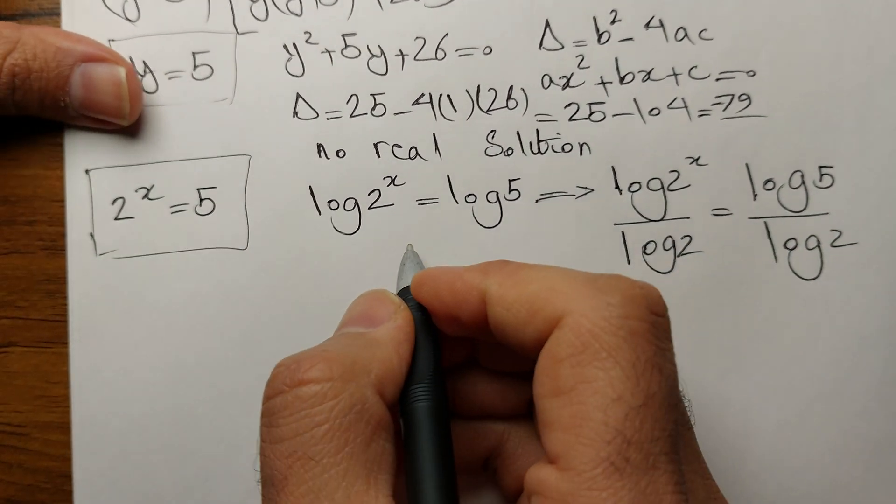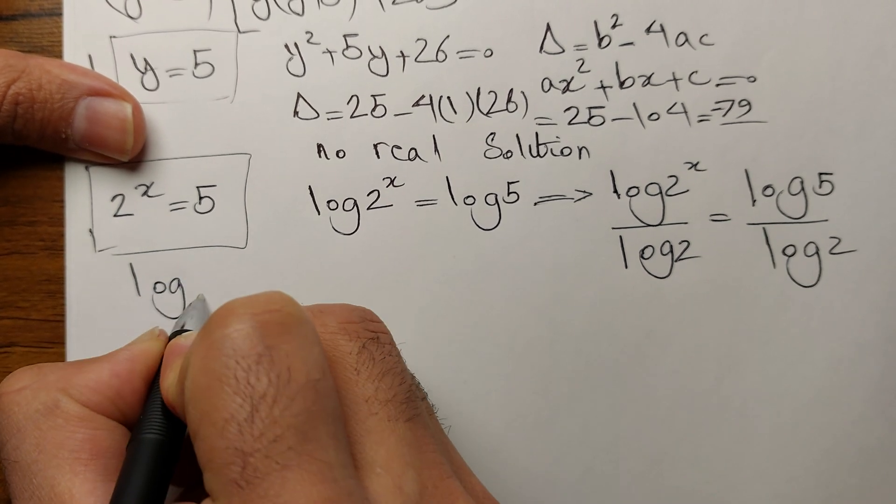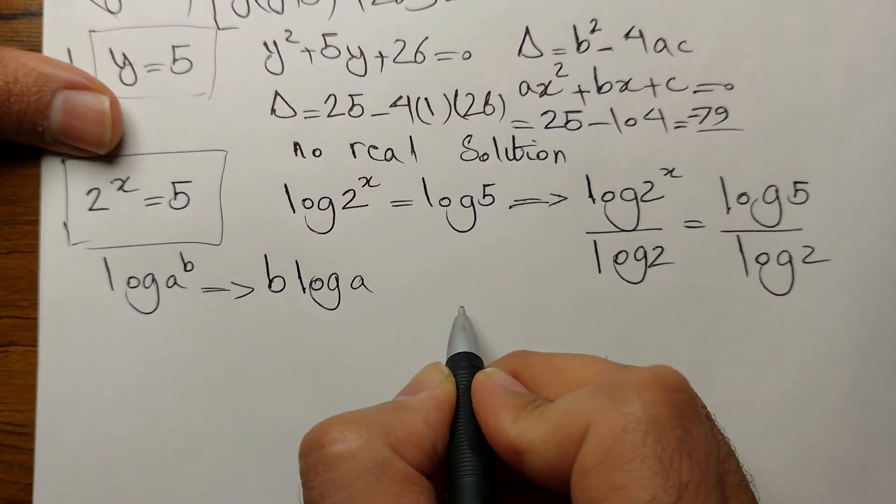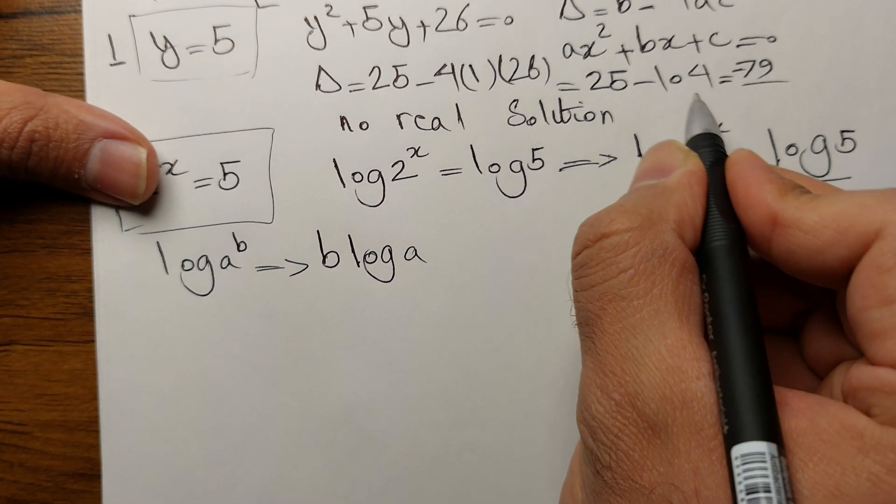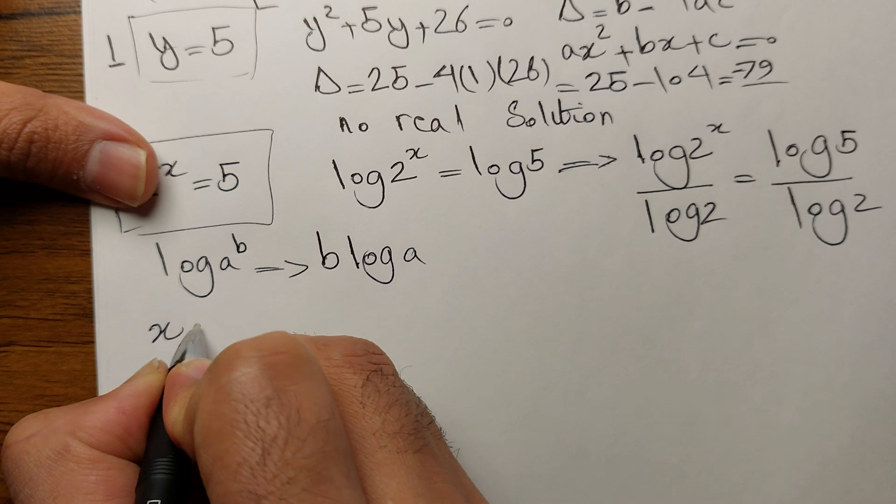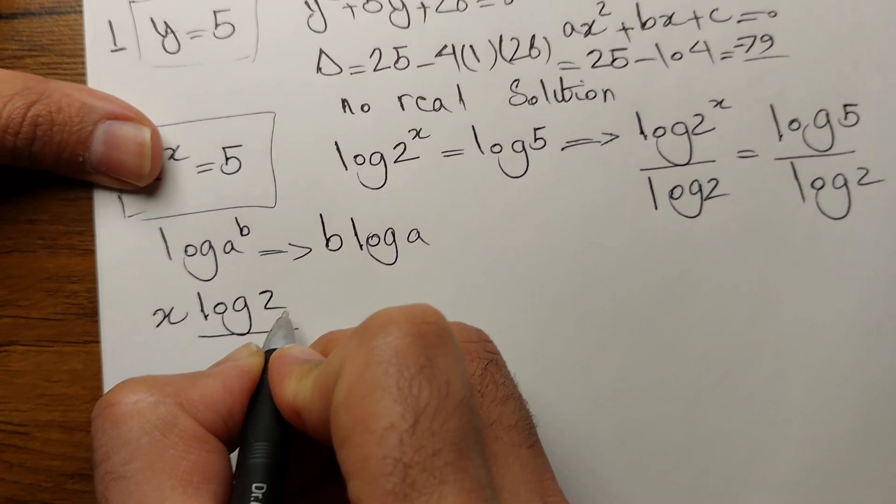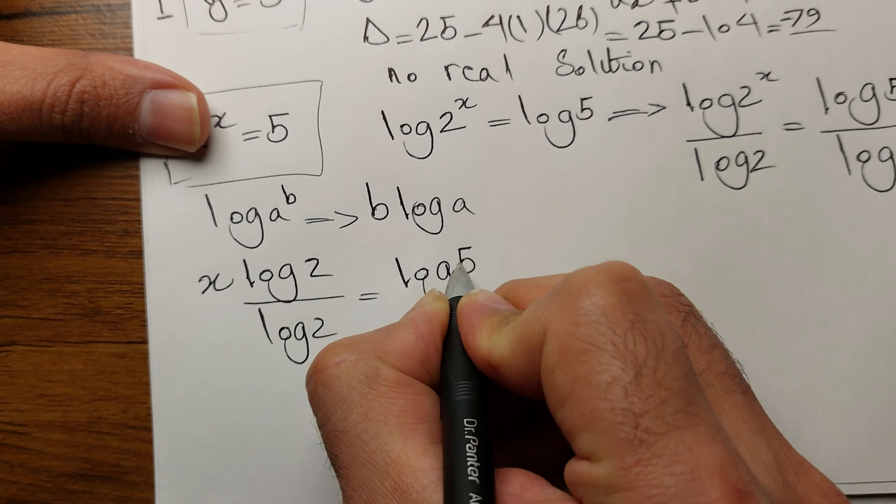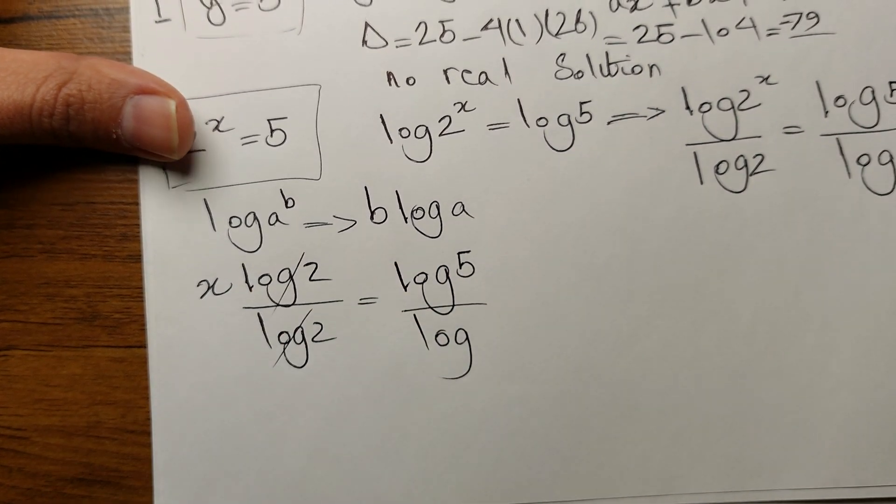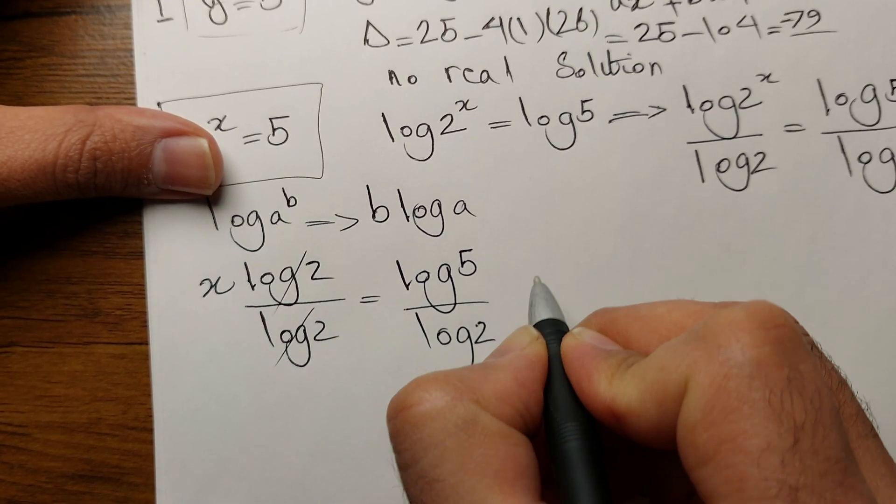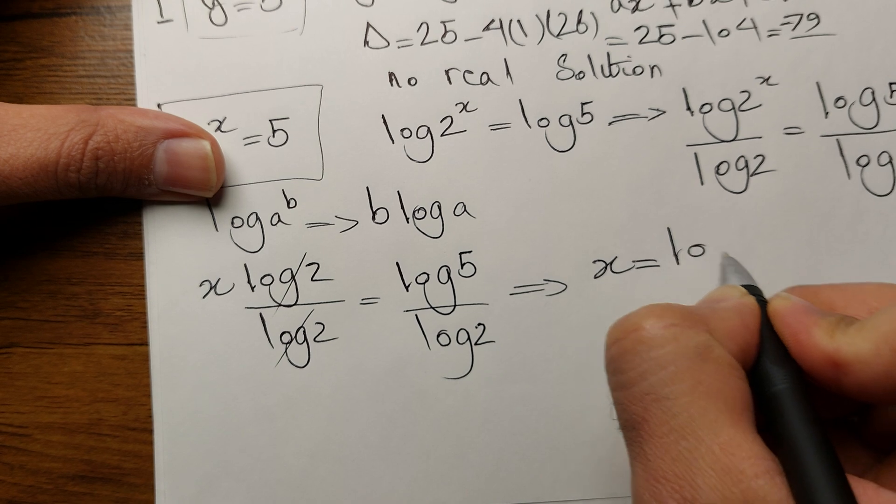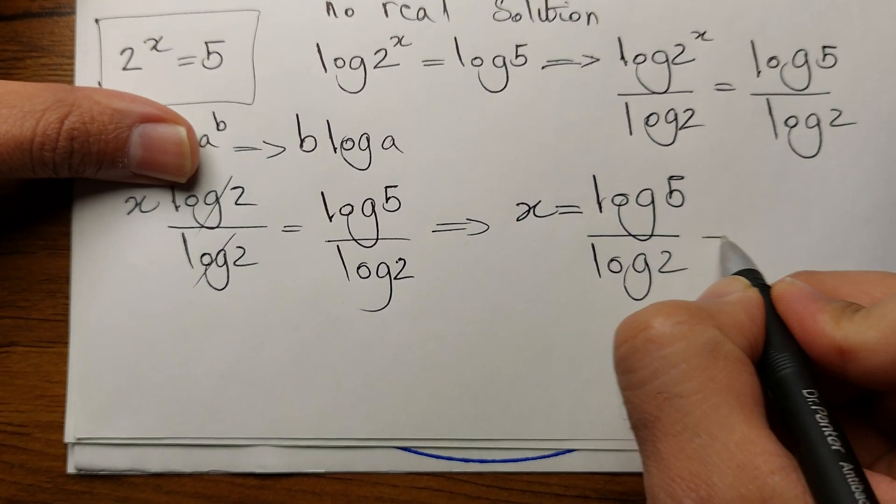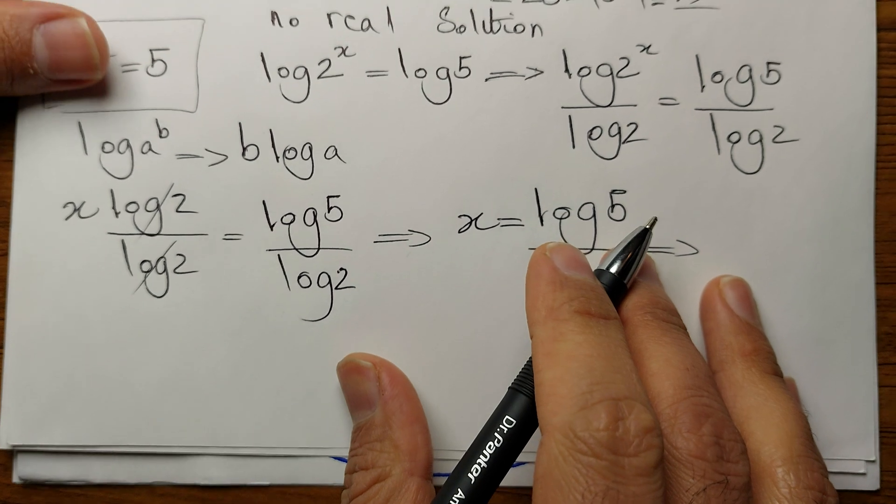Let's simplify that. Whenever we have log A to the power of B, we can rewrite it as B times log A. So let's rewrite it: we can take x out and multiply it by that. x times log 2 over log 2 equals log 5 over log 2. These two things cancel out. x equals log 5 over log 2.